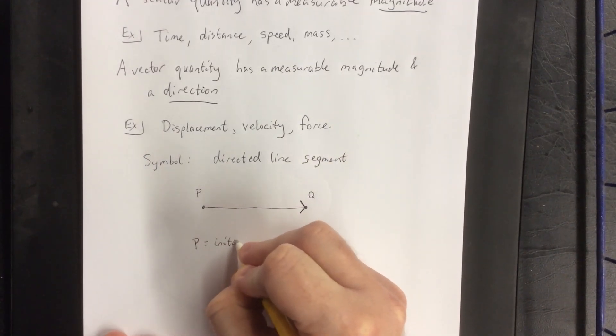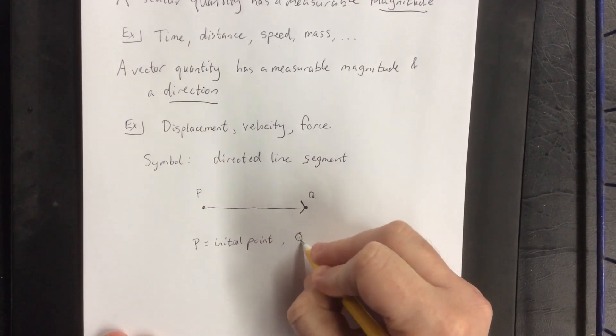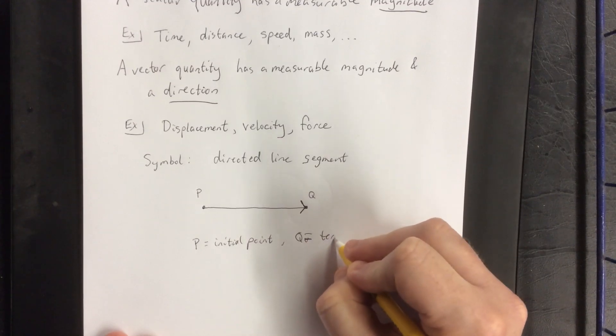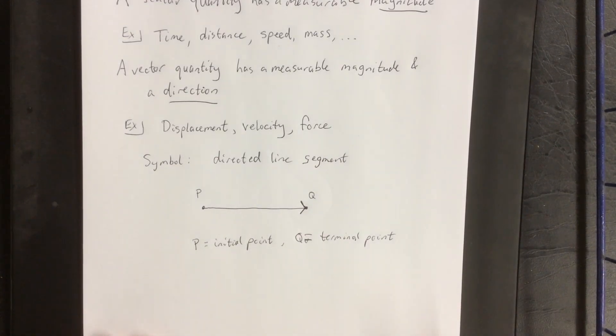P is known as the initial point. Q is known as the terminal point. We always go from initial point to terminal point.